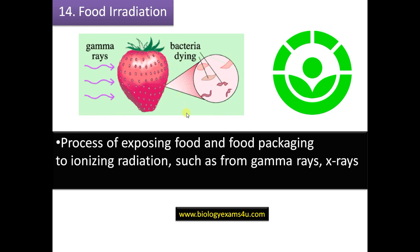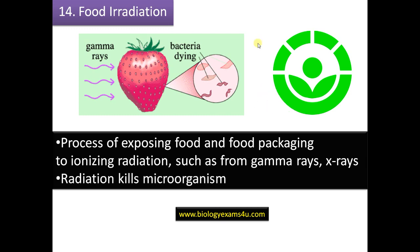Finally, food irradiation uses ionizing radiation such as gamma rays and X-rays. This radiation passes through foodstuffs, killing microorganisms and keeping food safe. Irradiated food products carry a specific symbol, and many food products are sterilized using this method.